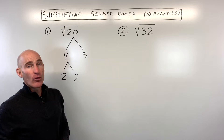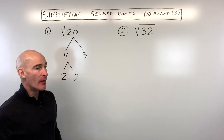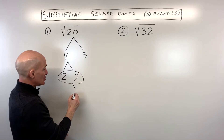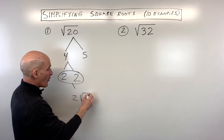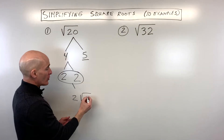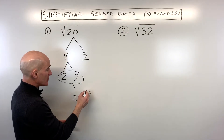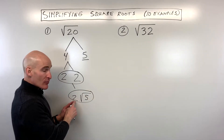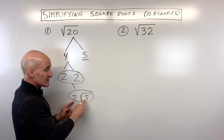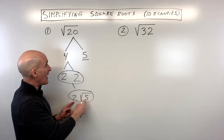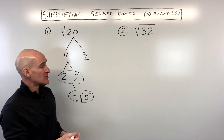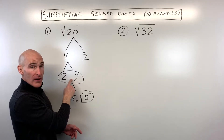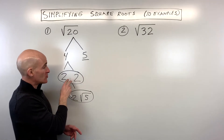Now what you're looking for is a pair of the same number — groups of two of the same number. So that pair is 2. That comes out in front of the square root, and whatever is left over stays underneath the square root, and you've got your answer. You can check by squaring the outside number: 2 squared is 4, times the number underneath, 5, gives you back 20. This works because 2 times 2 is 4, and the square root of 4 is 2 — that's a perfect square.